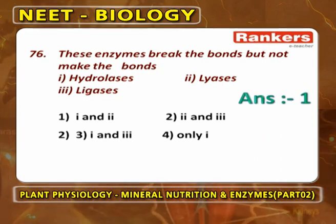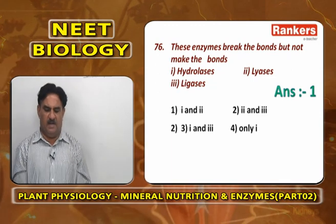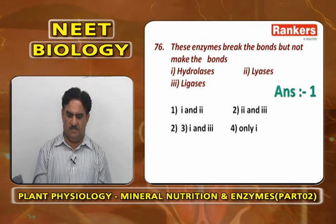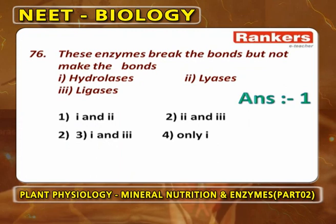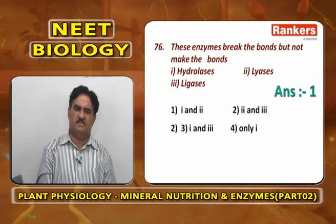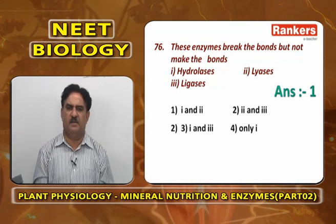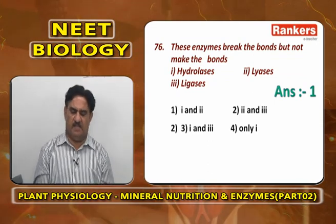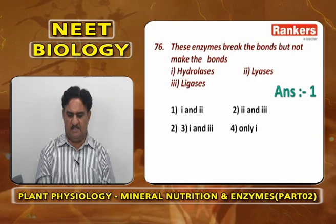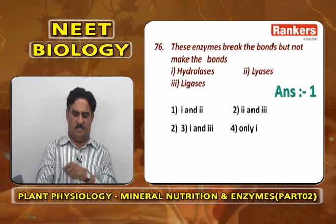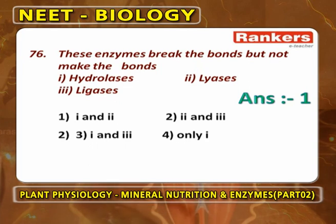Enzymes that break bonds but do not make bonds are hydrolyases and lyases. Making bonds is the property of ligases (utilizing ATP energy). Hydrolyases break compounds by addition of water — converting starches to carbohydrates, lipids to fatty acids and glycerol, proteins to amino acids. Lyases break arginosuccinic acid into arginine and fumaric acid without water. Answer is options 1 and 2 — first option.